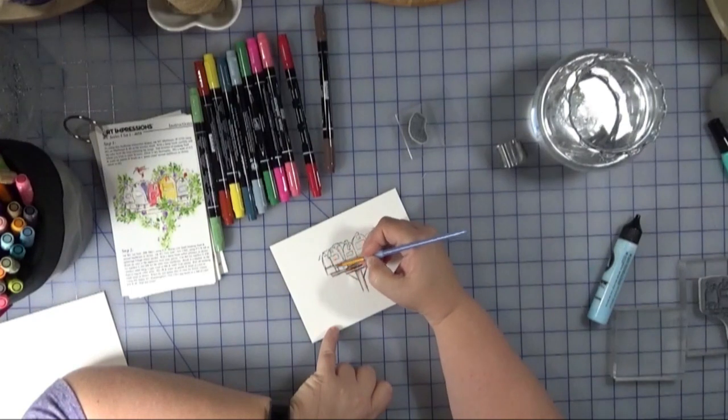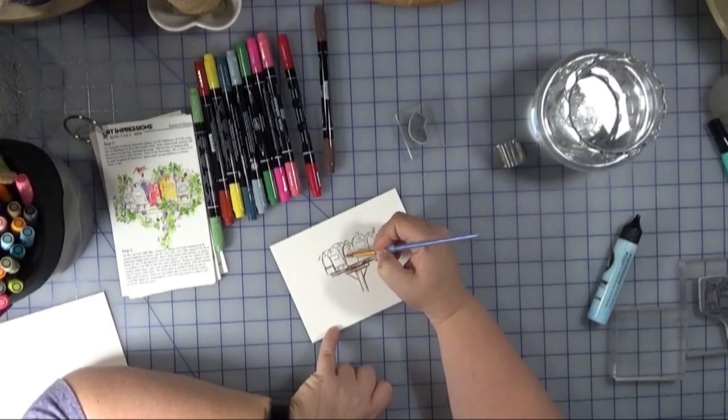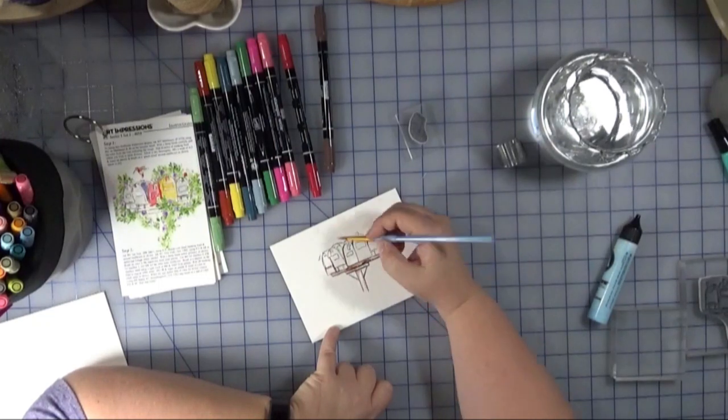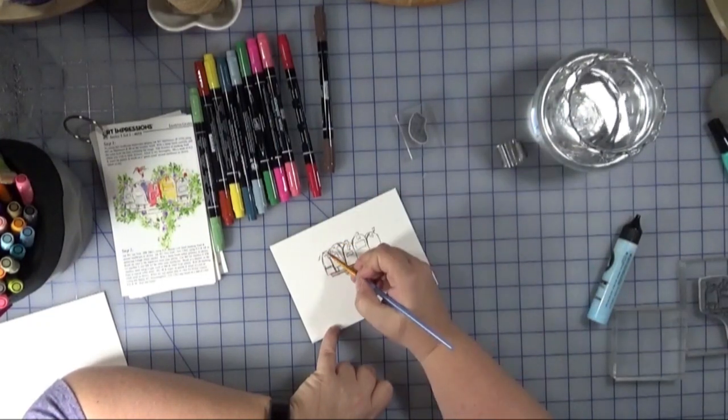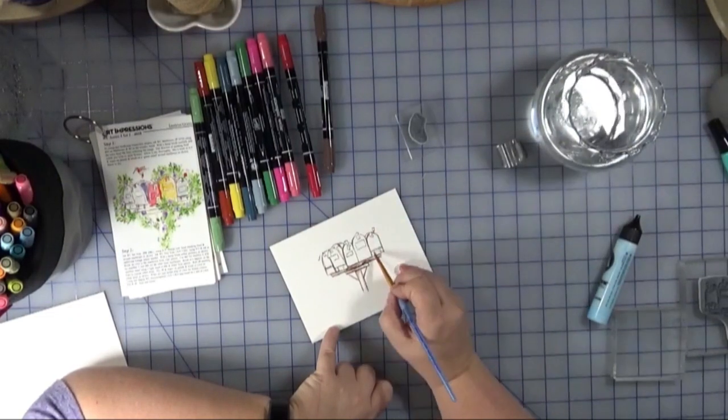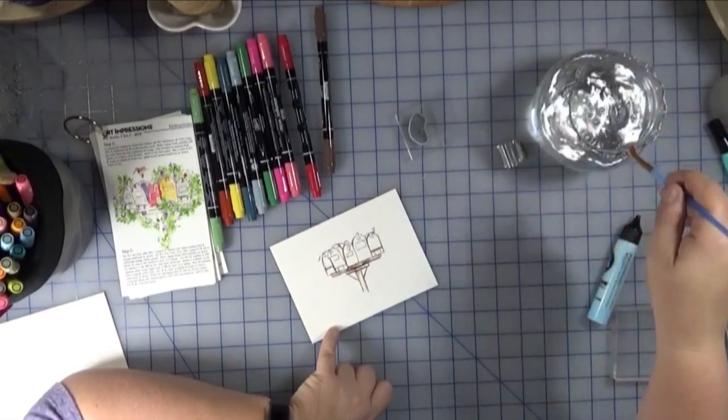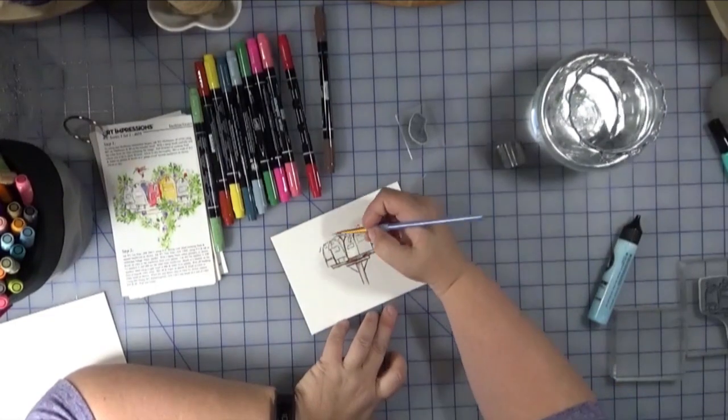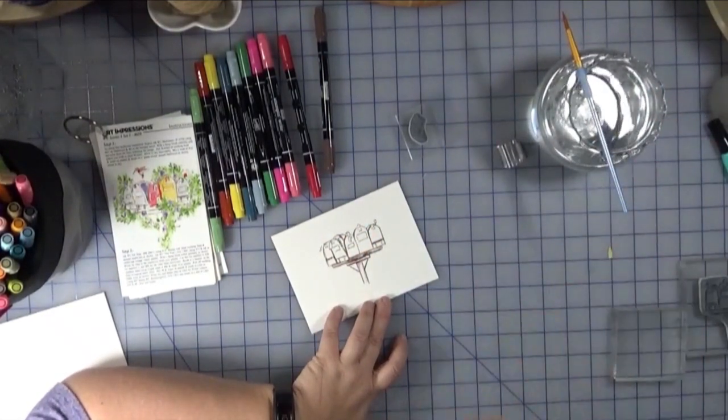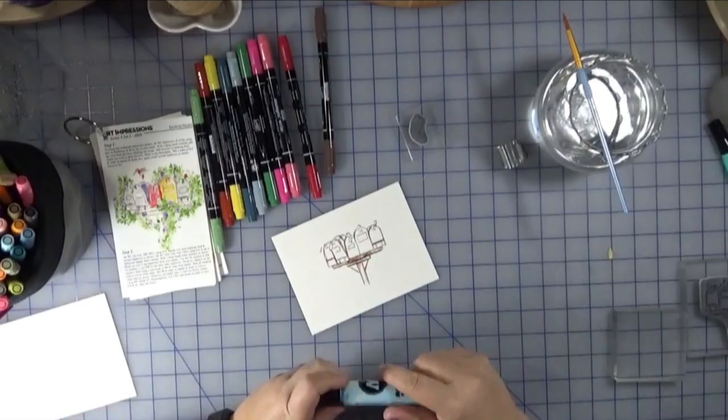The basic technique from what I can tell with Art Impressions is that you're just lightly going over many of the lines to kind of watercolor them out, so make them not quite so crisp. But you don't want to totally distort them, so just a very light hand is what I'm applying here.